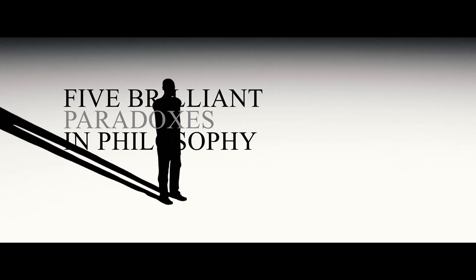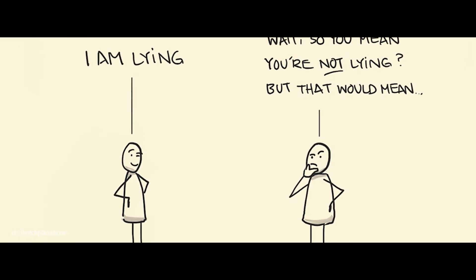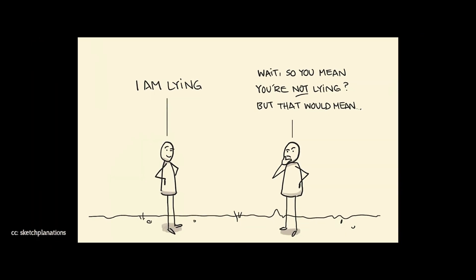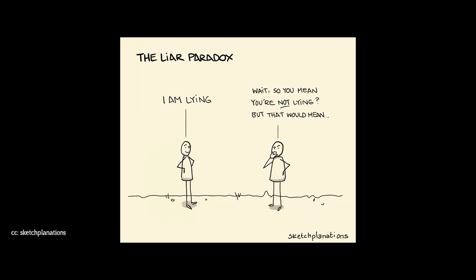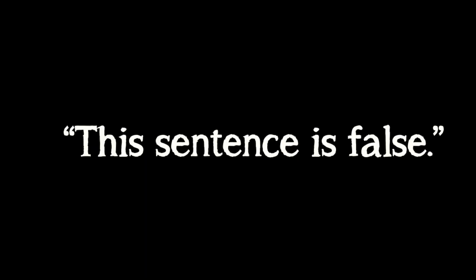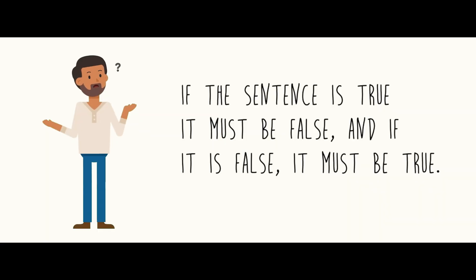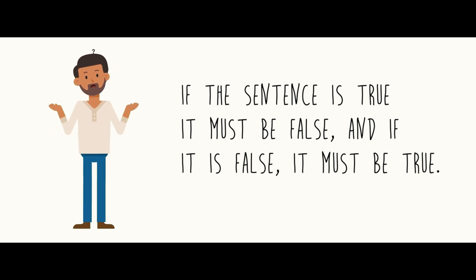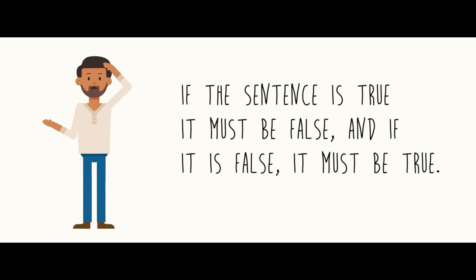First up, we have the liar paradox. The liar paradox is a statement that creates a self-referential contradiction. It is a statement that says: "This sentence is false." If the sentence is true, then it must be false. And if it is false, then it must be true. This creates a logical contradiction that has puzzled philosophers and logicians for centuries.